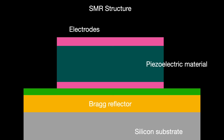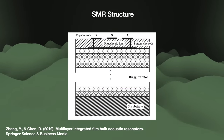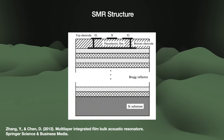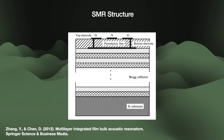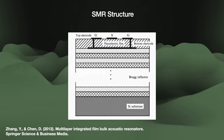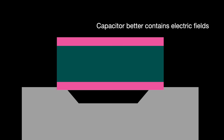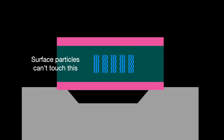While SMRs are very interesting, they are generally not as performant as FBARs at high frequencies. So our journey will continue on with the FBAR. Beyond their suitability for higher frequencies, FBAR filters hold many intrinsic benefits over SAW filters. For instance, the capacitor-like structure means better containment of the electrical fields, preventing electrical crosstalk between filters. And they are less sensitive to contamination from surface particles landing on the filter — that was a real problem for SAW filters.